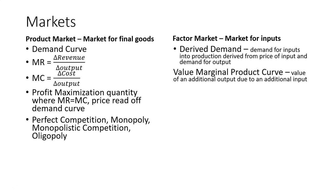The value marginal product can be determined by taking the price of the output and multiplying it by the marginal physical product of the output. Marginal physical product is the change in output over the change in input. Through the marginal physical product, we're looking at change in output over change in input, and we multiply that by the price of the output to get it in terms of dollars. This is what we use in place of the demand curve.